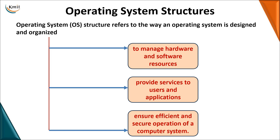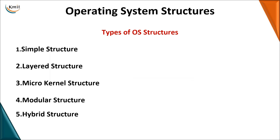Operating system structure refers to how we go about designing our operating system. We want this designing done to manage hardware and software resources, provide services to the user, and ensure secure and efficient operation of a computer system. We have five different types of operating system structures: simple structure, layered structure, microkernel, modular, and hybrid structure.